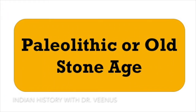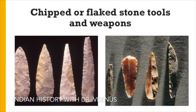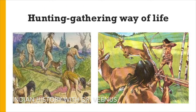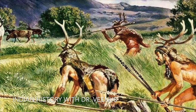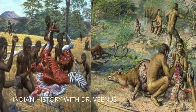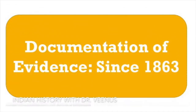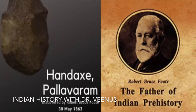Paleolithic, or the Old Stone Age, is the longest phase of prehistory, covering the time from 2 MYA to 10,000 BC. It was characterized by the making of chipped or flake stone tools and weapons and by a hunting-gathering way of life. Microwear analysis of Paleoliths suggests their use for purposes ranging from hunting, butchering and skinning of animals, digging of roots, to making wooden tools and weapons. Documentation of evidence began with the discovery in 1863 of the first Paleolithic tool, a hand axe at Pallavaram near Madras, by Robert Bruce Foote, called the father of Indian prehistory.